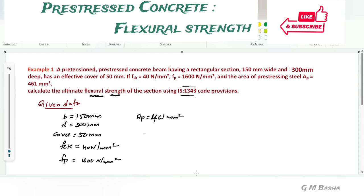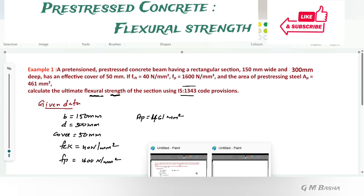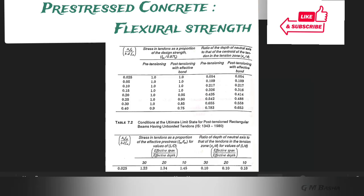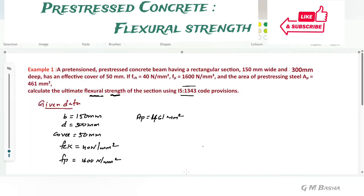We have to calculate the ultimate flexural strength of the section using IS 1343 procedures. First, according to the table, we have to find out this value: Ap fp by bd fck.